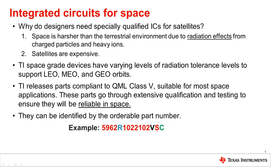Let's read the orderable part number. The main body of the part number is comprised of the Defense Logistics Agency's Standard Microcircuit Drawing Number, or the SMD. The letter in the middle indicates that the part is Radiation Hardness Assured, or RHA, which means that every lot is tested to a total ionizing dose radiation performance set by the letter in the part number. In this case, the R means 100k rad TID.